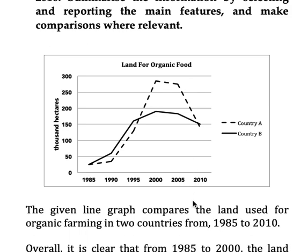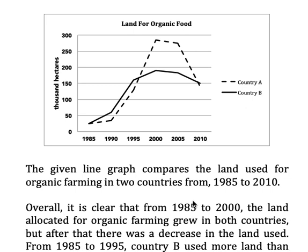This is my sample answer. This graph is at number 100 in my book, 2019 edition, which has graphs from the past IELTS exams. You can see you have to write the introduction from the given statement: 'The given line graph compares the land used for organic farming in two countries from 1985 to 2010.' The comma should be before the word 'from'.